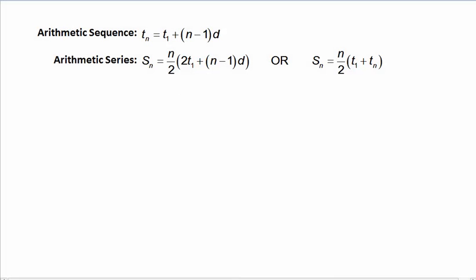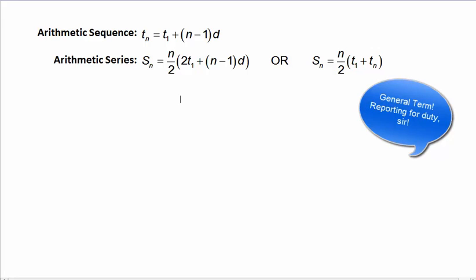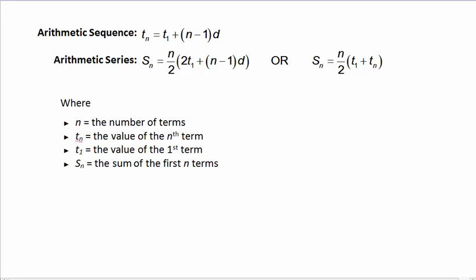So one more time, we have our basic formula for the general term of the arithmetic sequence: tn equals t1 plus n-1 times d. We have the formula for the arithmetic series. The sum of the first n terms equals n over 2 times 2t1 plus n-1 times d. Or, sum of the first n terms is equal to n over 2 times t1 plus tn. And let's just make sure we all know what all of those variables represent. n represents the number of terms. tn is the value of the nth term. t1 is the value of the first term of the sequence. And Sn is the sum of the first n terms of the arithmetic series.